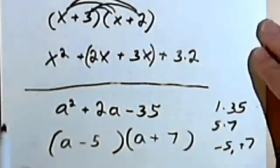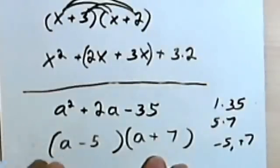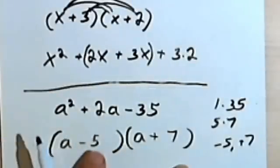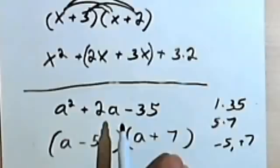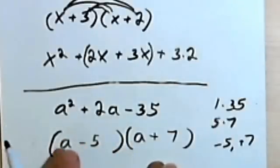Now something I didn't mention before, but I hope you realize, it doesn't matter which order I do these in. In other words, I can write a minus 5 times a plus 7 or a plus 7 times a minus 5. That would just be a matter of commuting these two binomials.